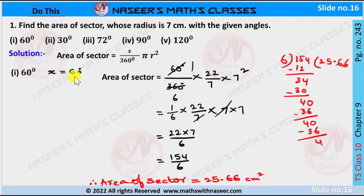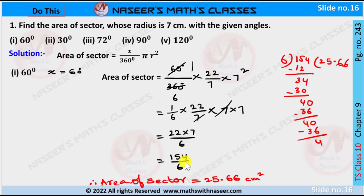We substitute x equal to 60, then area of sector is written as 60 by 360 into 22 by 7 into 7 squared. We cancel 60 with 360 to get 1 by 6 into 22 by 7 into 7 into 7. We cancel 7 in the denominator, then we get 22 into 7 by 6. 22 into 7 is 154, so we write 154 by 6. After dividing 154 by 6, we get 25.66 centimeters squared. Therefore, area of sector is equal to 25.66 centimeter square.